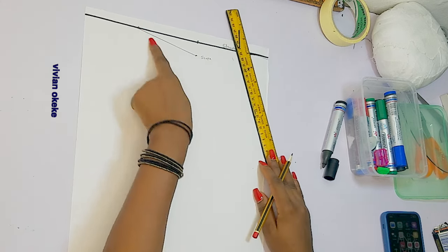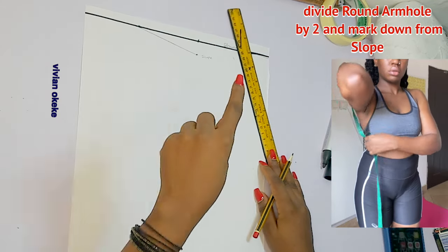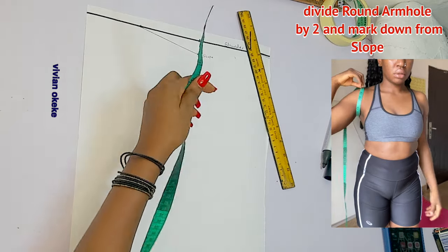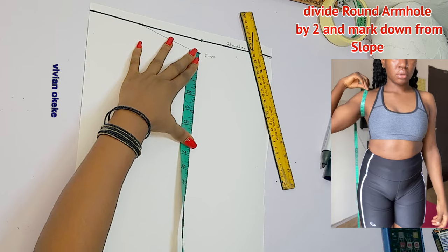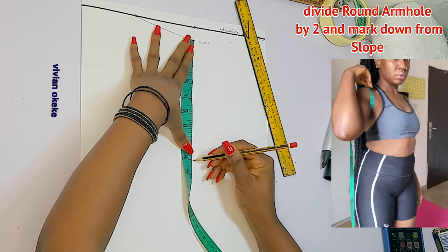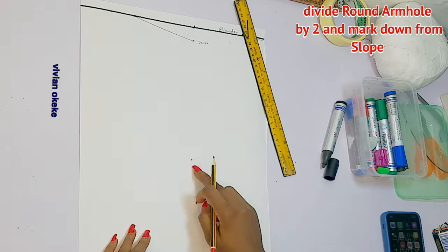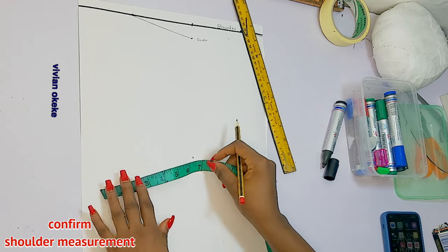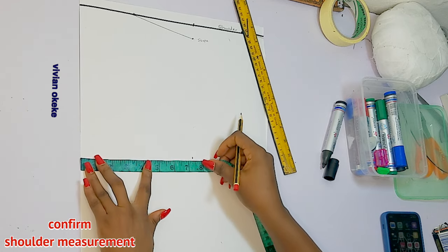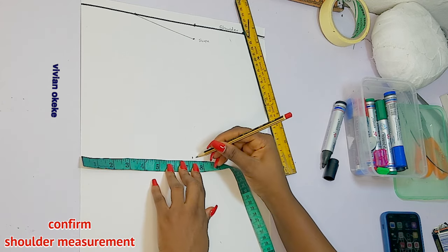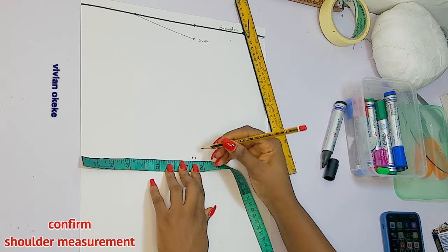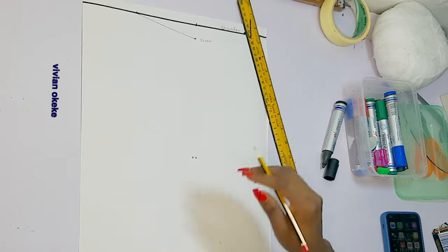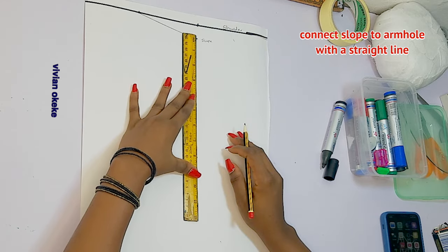Next, divide the round armhole by two and mark this down from the slope. Remember, we're drafting the basic bodice right now, and once done we'll adjust to get the corset pattern. I confirm the shoulder measurement of 7.5 on the armhole point, going out to 7.5 inches, and then connect this to the slope with a straight line.